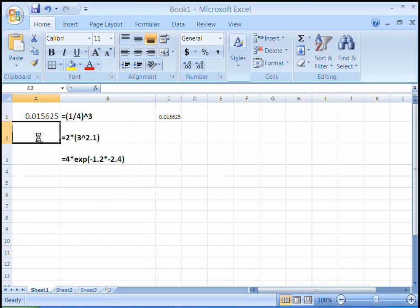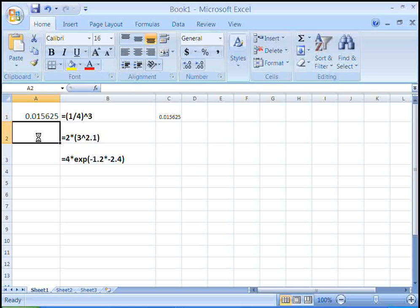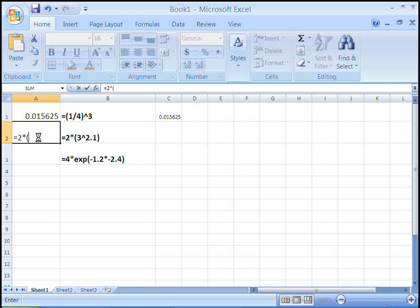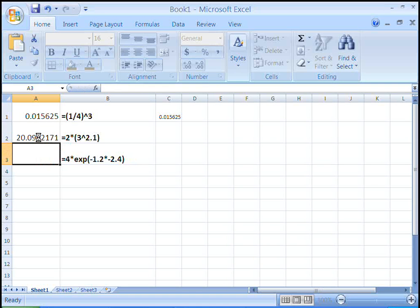So once again, I've got in column B what I'm going to type in here to get it to evaluate. I'm going to say equals 2 times. And now I need to use my parentheses, so it only raises the 3 to the power. 3, again, use my caret to tell it to raise it to the power of 2.1. Hit enter, and I see that my decimal equivalent is 20.09.